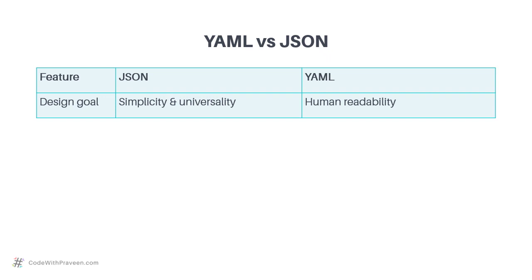In the case of YAML, the main goal is human readability. They want it to be easier for humans — basically developers — to use this language more easily. That's why the structure of YAML is very different and much easier when compared to other languages.